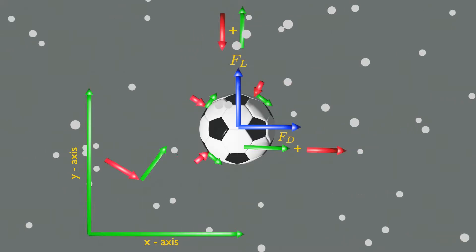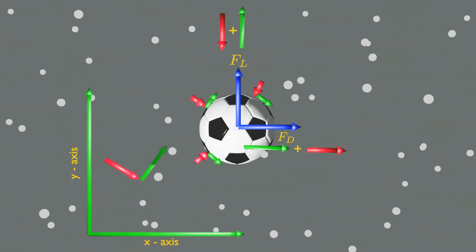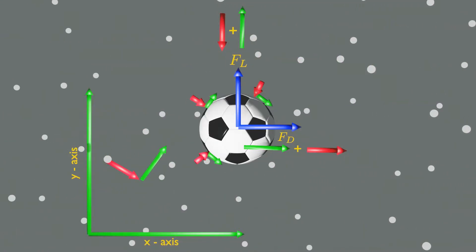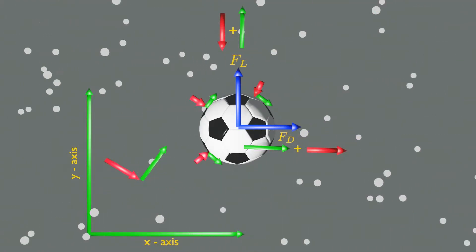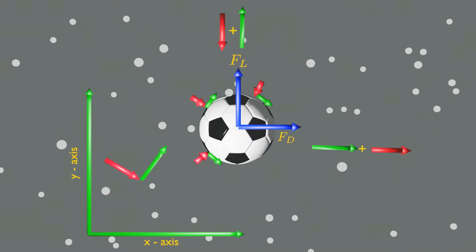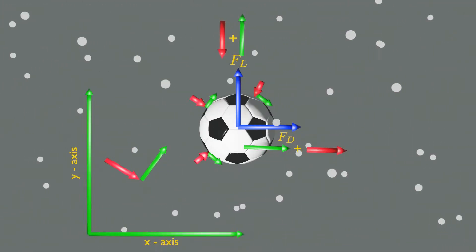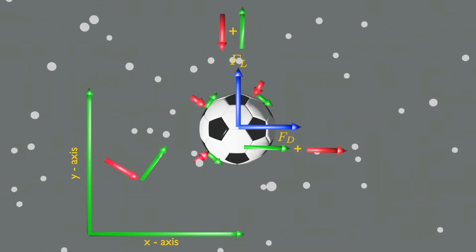So, for two-dimensional flows, the resultant of the pressure and shear forces can be split into two components, one in the direction of flow, which is the drag force, and another in the direction normal to flow, which is the lift.